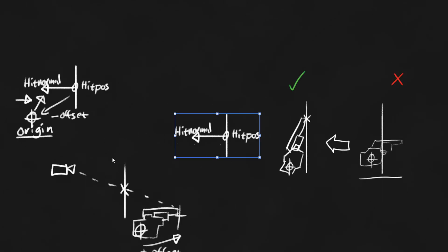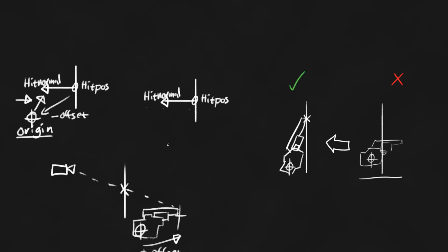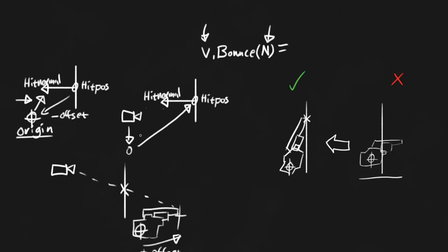There are a couple ways to do this for the angle. We take our camera location and get a position just a little bit below it — about one meter below. Then we draw a line towards the hit position from that location and use the dot bounce function. Essentially, dot bounce takes a normal and a vector and outputs a vector bouncing off that location with an equal angle off of the hit normal — so this angle and this angle should be equal but opposite.